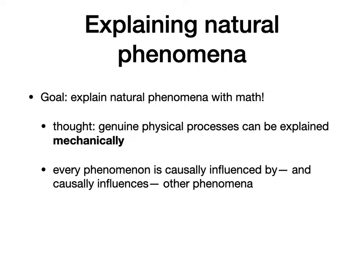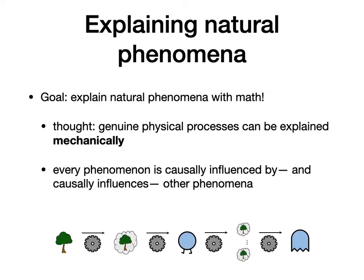Every phenomenon is causally influenced by and causally influences other phenomena — no action at a distance. Things have to be connected in a meaningfully physical way. So the tree is mechanically connected to the image of a tree, which is mechanically connected to our brains and bodies, which is mechanically connected to the thought of a tree. This is how we're getting to a science around this question — there must be some mechanical step between each of these.